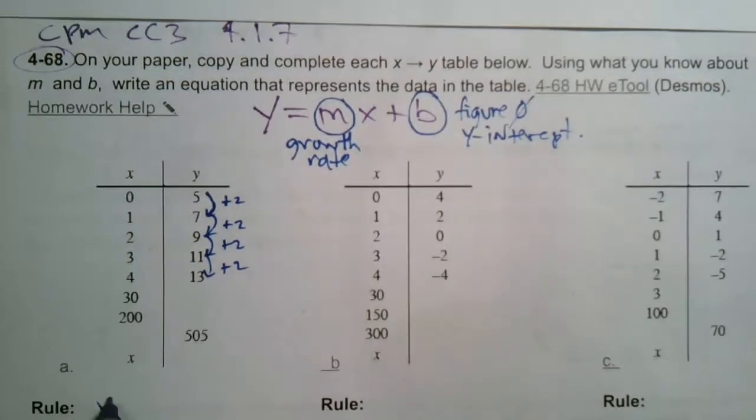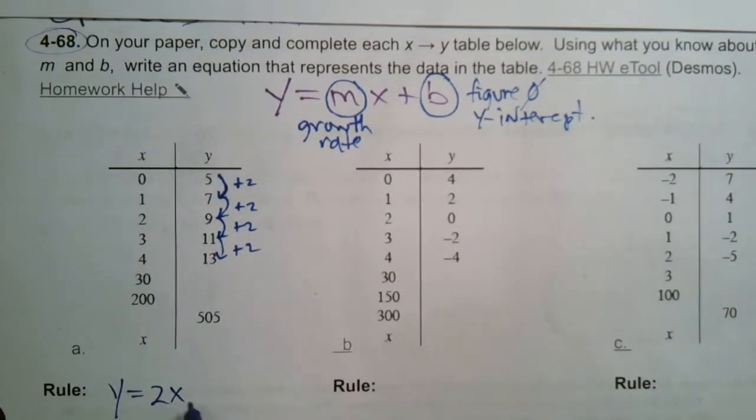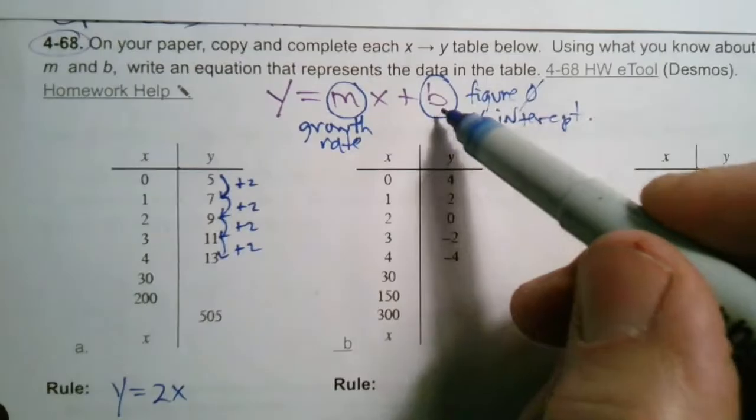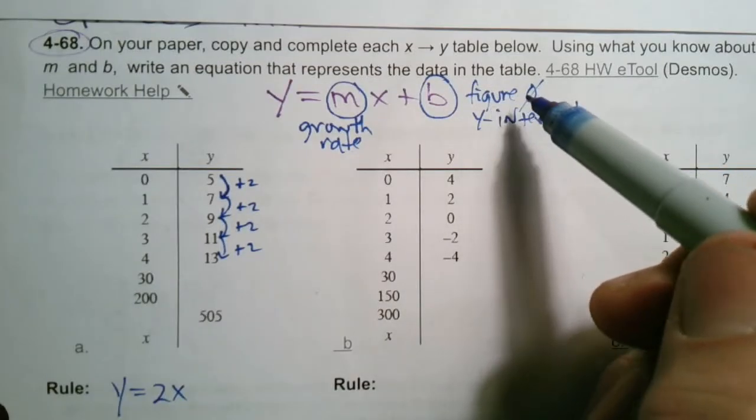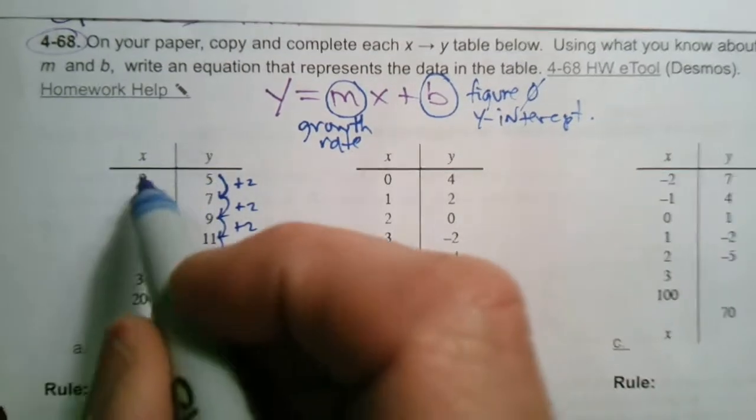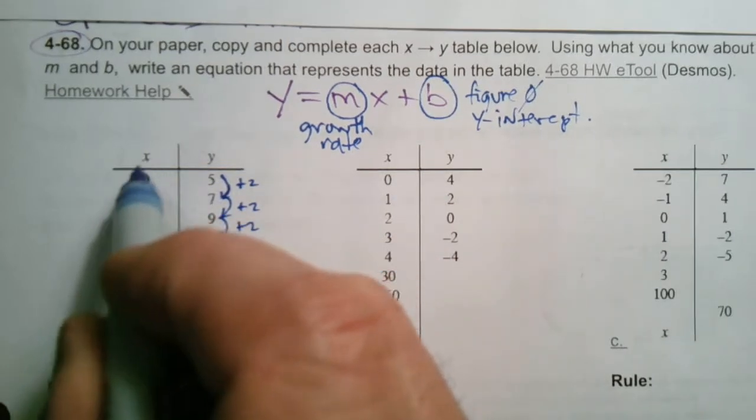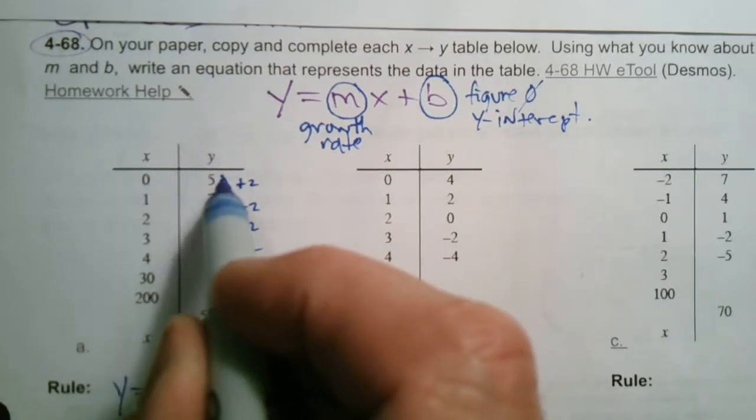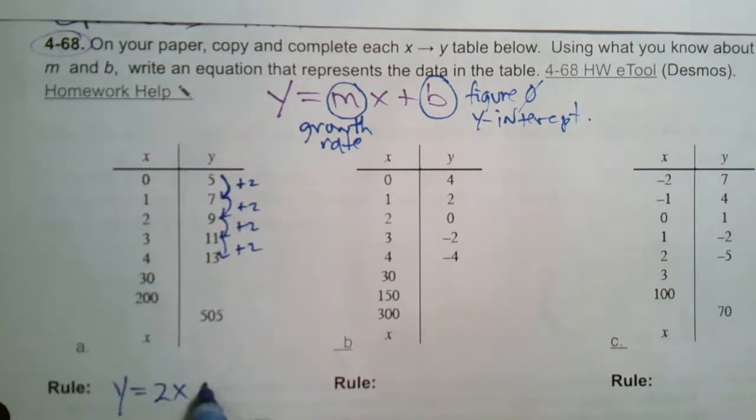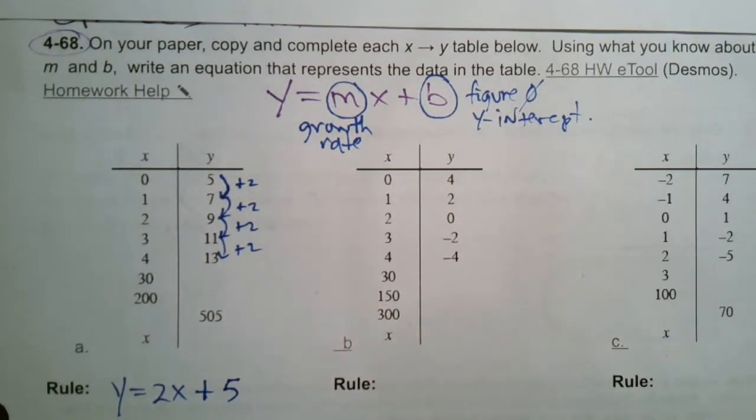So I can say the rule is equal to 2x. And now I've just got to figure out what my b is. And b, remember, is the figure zero. So if I go back to my table, it's my initial value. My initial value, when x equals zero, y equals five. That's my initial value. So my rule, then, is y is equal to 2x plus 5.